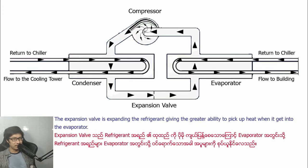The condensed refrigerant is pushed by the compressor and then hits the expansion valve. The expansion valve expands the refrigerant, giving it greater ability to pick up heat when it enters into the evaporator.